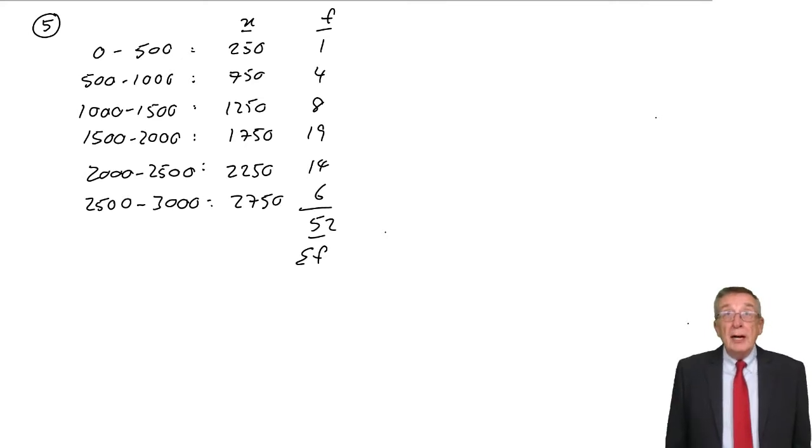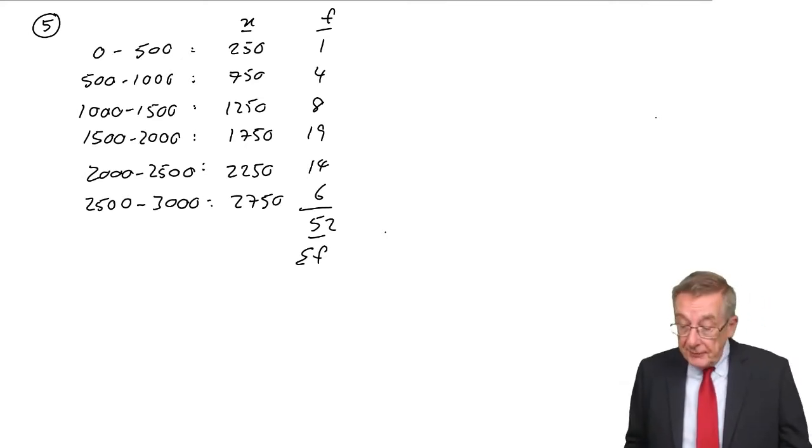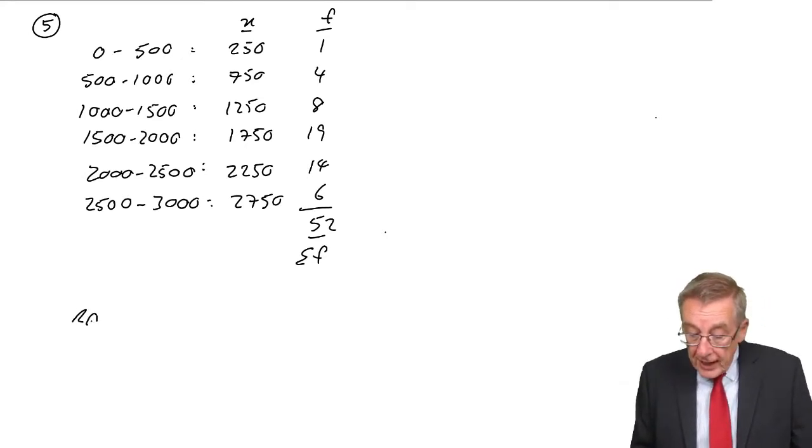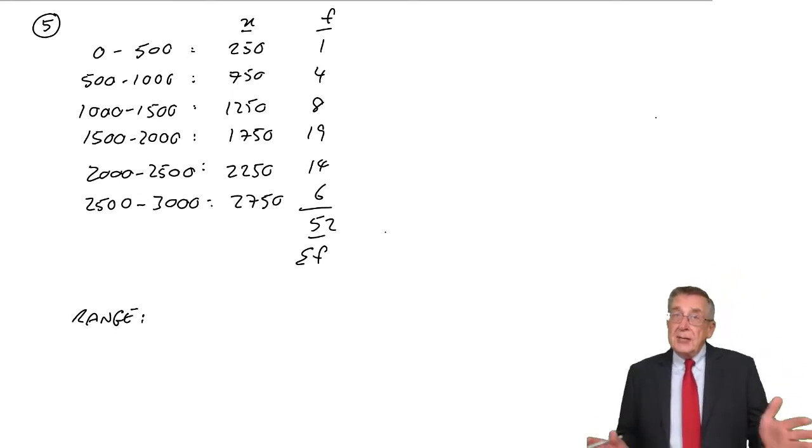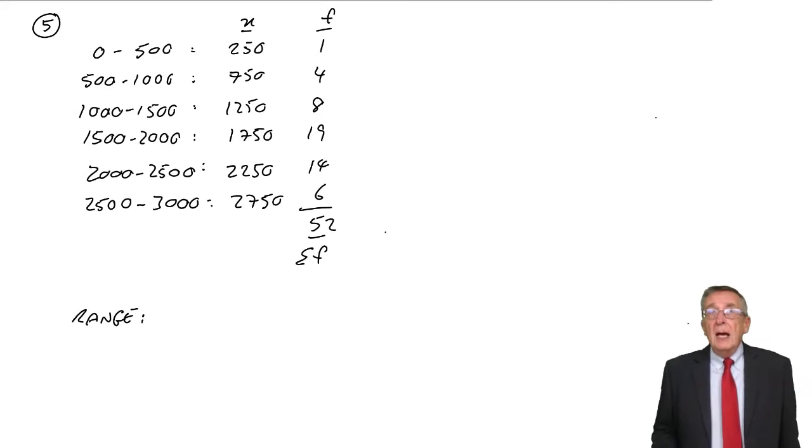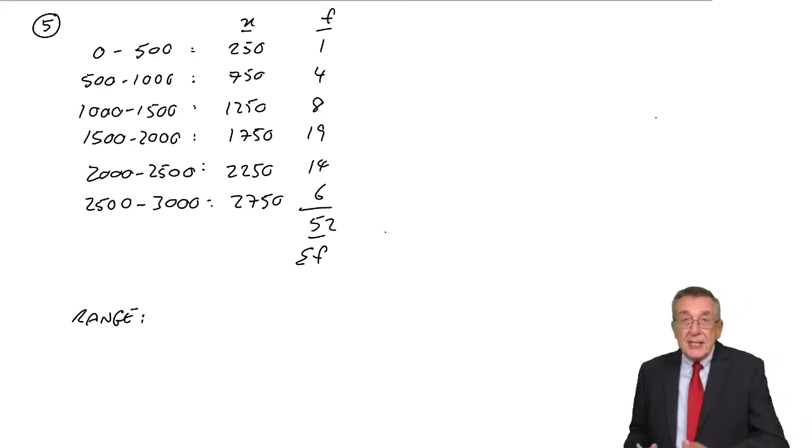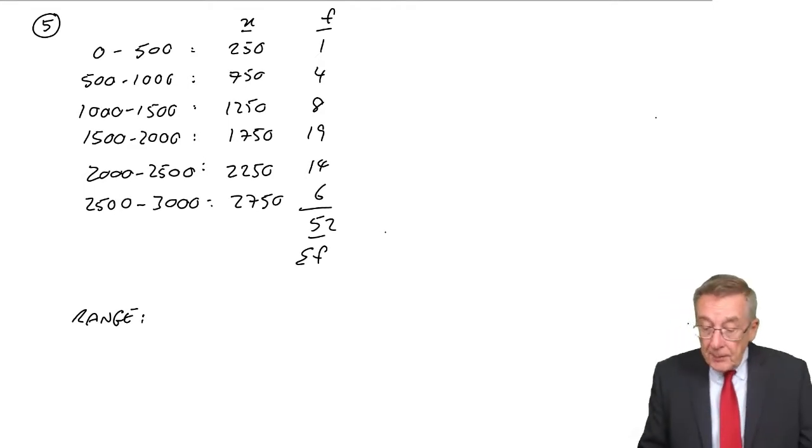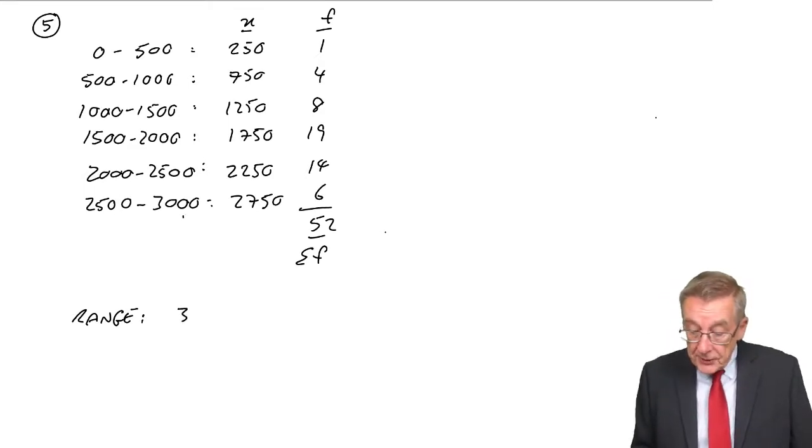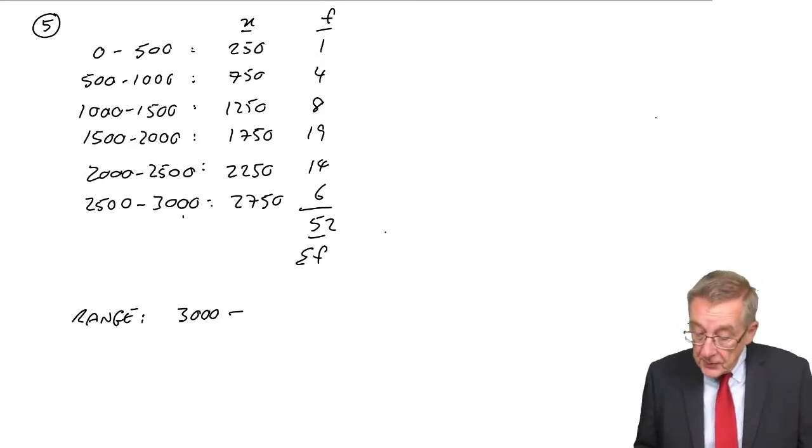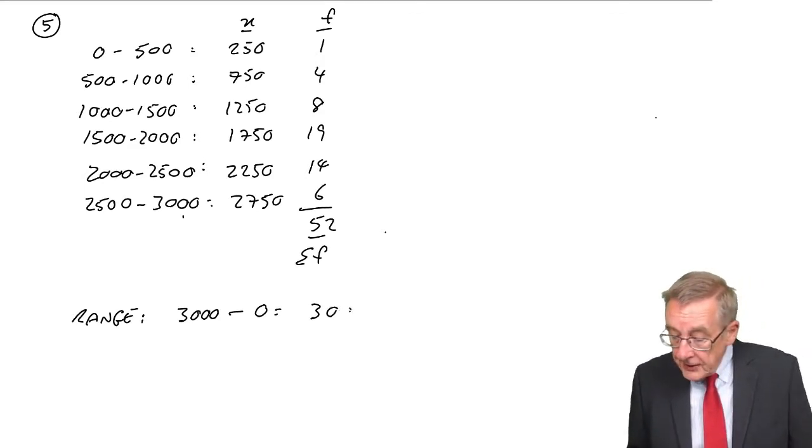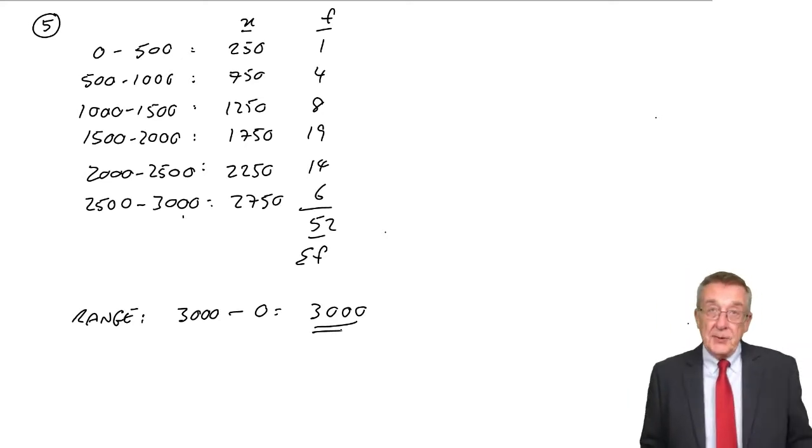All right, well, let's look at the four measures exactly in the same way as we did before. First of all, the range. Difference between the highest and the lowest. Although when it's groups, for this bit, we ignore these midpoints. We take the top of the highest range, which was 3,000, and the bottom of the lowest group, which was 0.